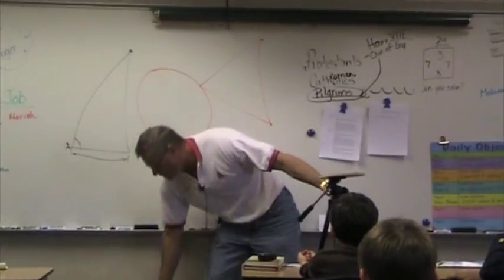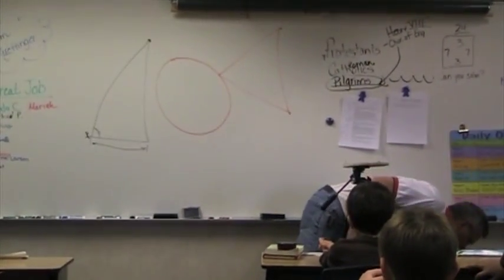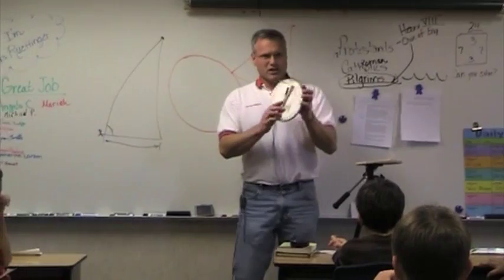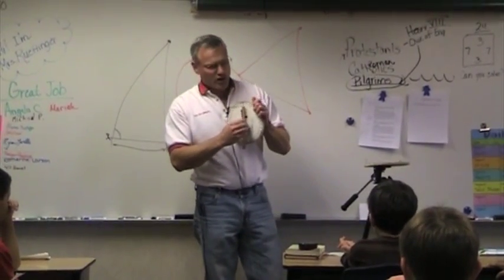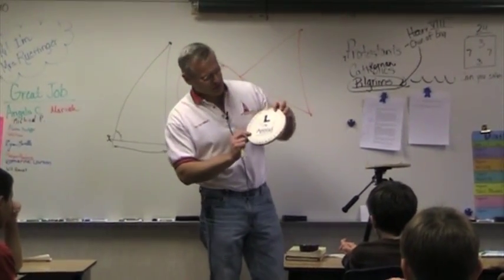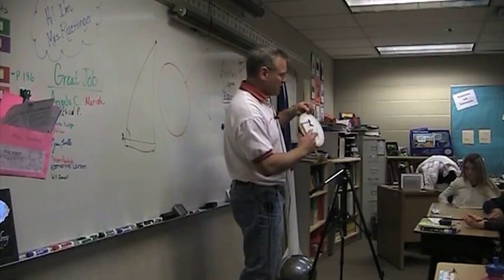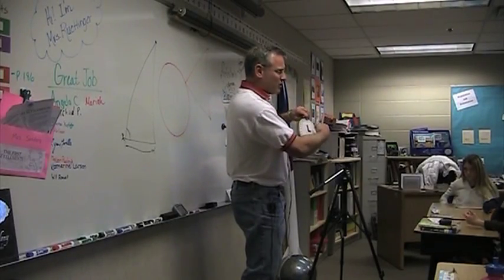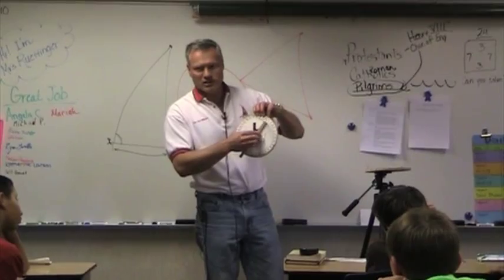It's this instrument here. Basically, this is kind of like a protractor. You guys know what a protractor is? Yes. We have zero degrees and 90 degrees. Well, this goes all the way around the circle. How many degrees are in a circle? 360.